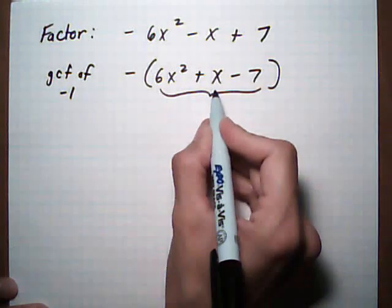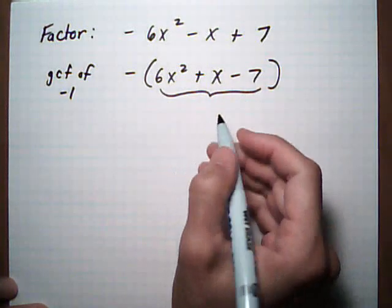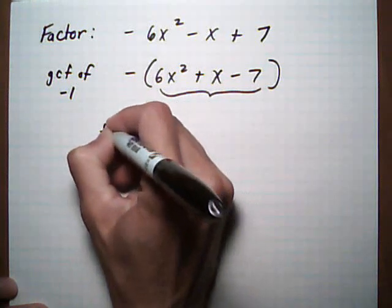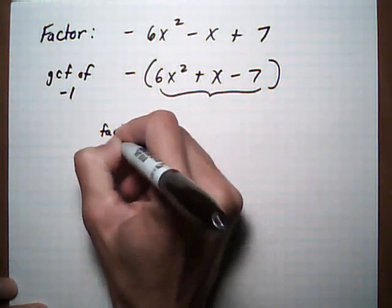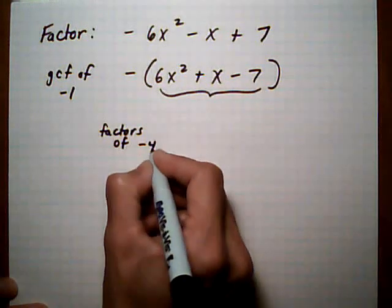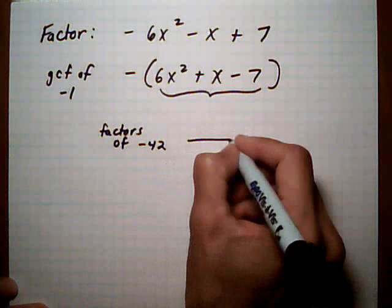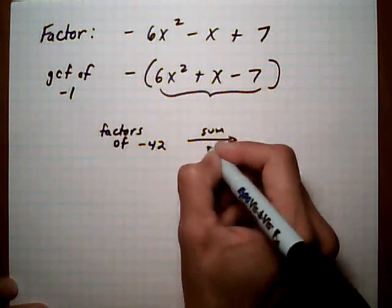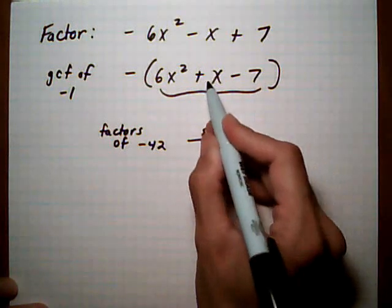We want to factor 6x squared plus x take away 7. So we look for factors of 6 times minus 7, which would be minus 42, that sum to the middle term of plus 1.